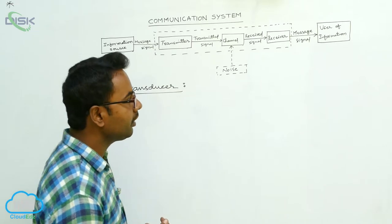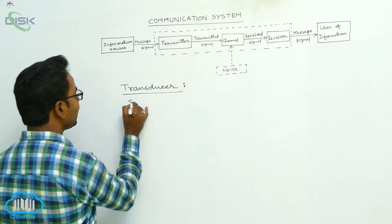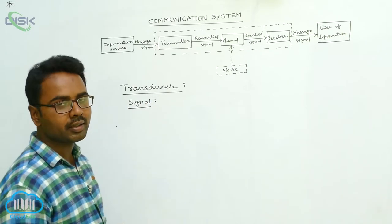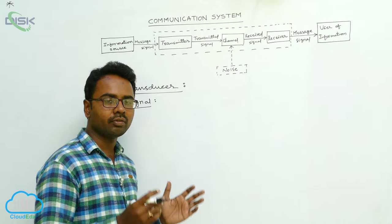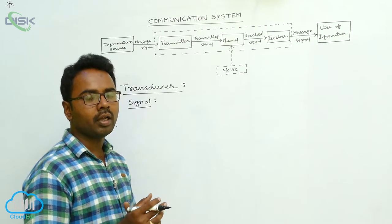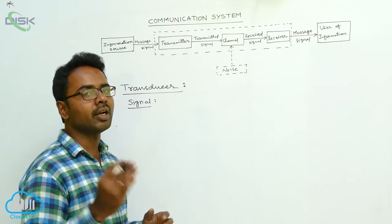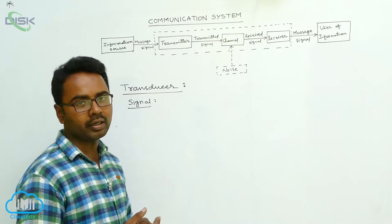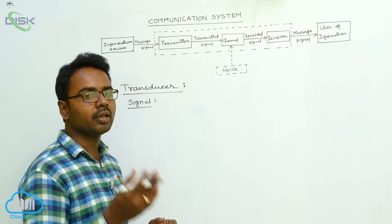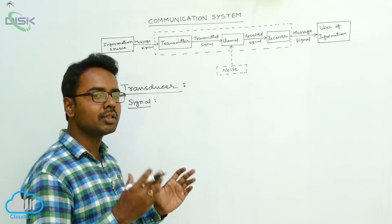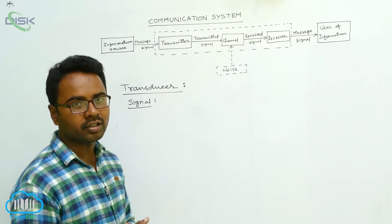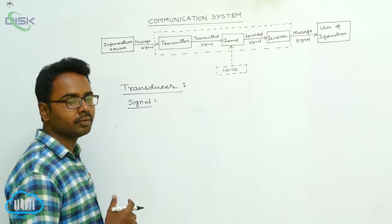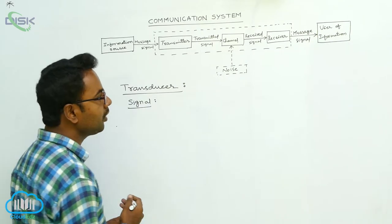A signal is the information converted into electric form which is suitable for transmission. First of all, information should be converted into an electric signal, and thereafter it is suitable for transmission through the channel. So signal means information converted into electric signal which is suitable for transmission.